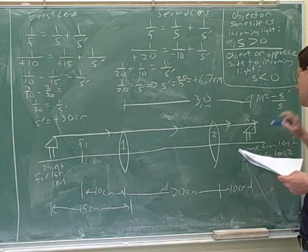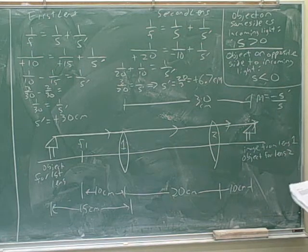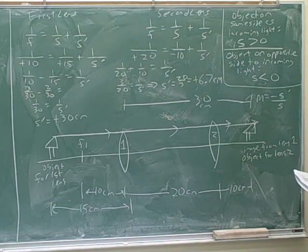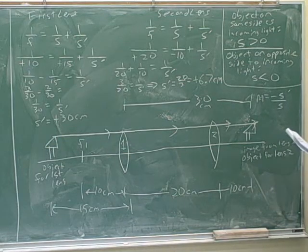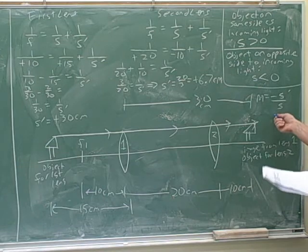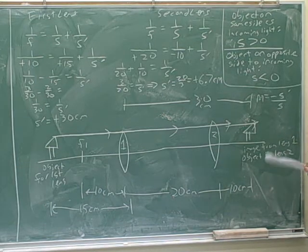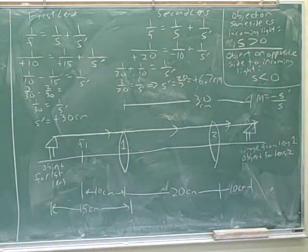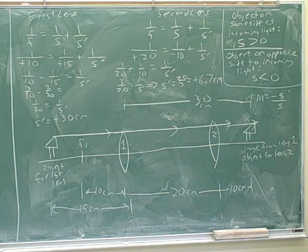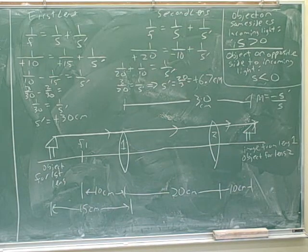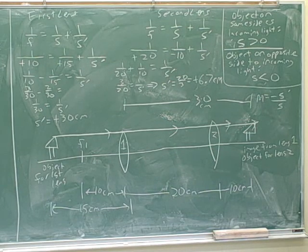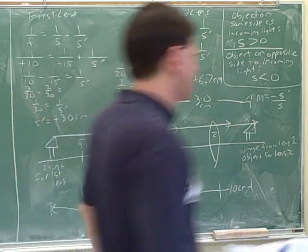So the magnification would use negative 6.7 over the object distance for the second lens. But wait — this is the final image, so we need to think carefully. We'd be plugging in negative 6.7 over the object distance for the second lens. This is not that simple — let me take you through this.